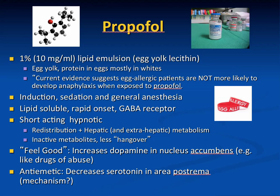Patients may feel good after propofol not only because the drug is gone but also because it increases dopamine in areas of the brain like the nucleus accumbens, similar to what happens with drugs of abuse. Propofol has anti-emetic properties — substituting propofol reduces postoperative nausea and vomiting, possibly by decreasing serotonin in the area postrema, the nausea and vomiting center of the brain, though the mechanism is incompletely understood.